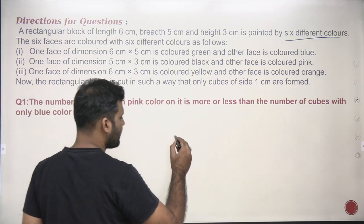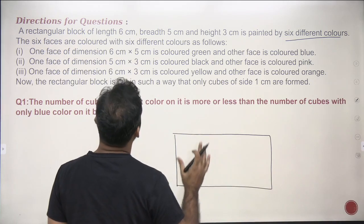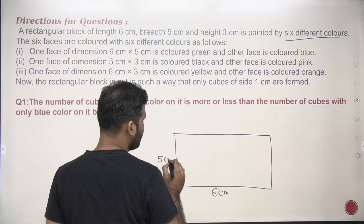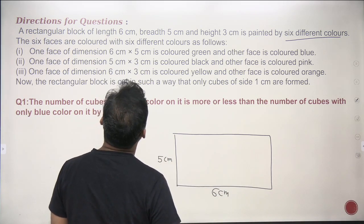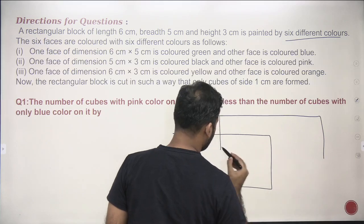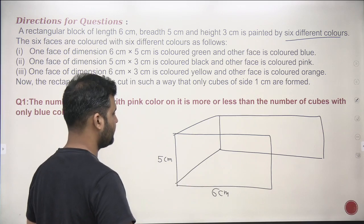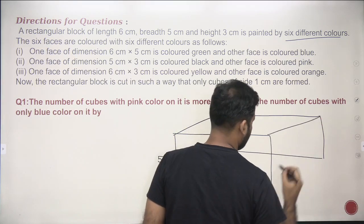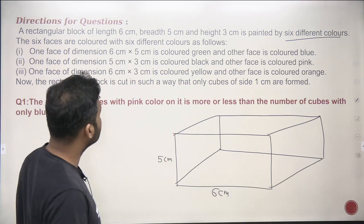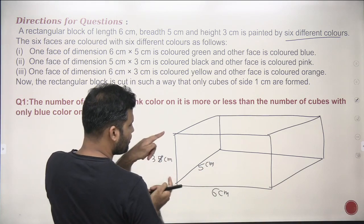So let's first make a rectangular cuboid with the given dimensions. Let's say 6 centimeter is the length, 5 centimeter is the width, and the height is 3 centimeter. So you need to make a cuboid like this. This is the cuboid — 6 centimeter is the length, 5 centimeter is the width, and 3 centimeter is the height of the cuboid.